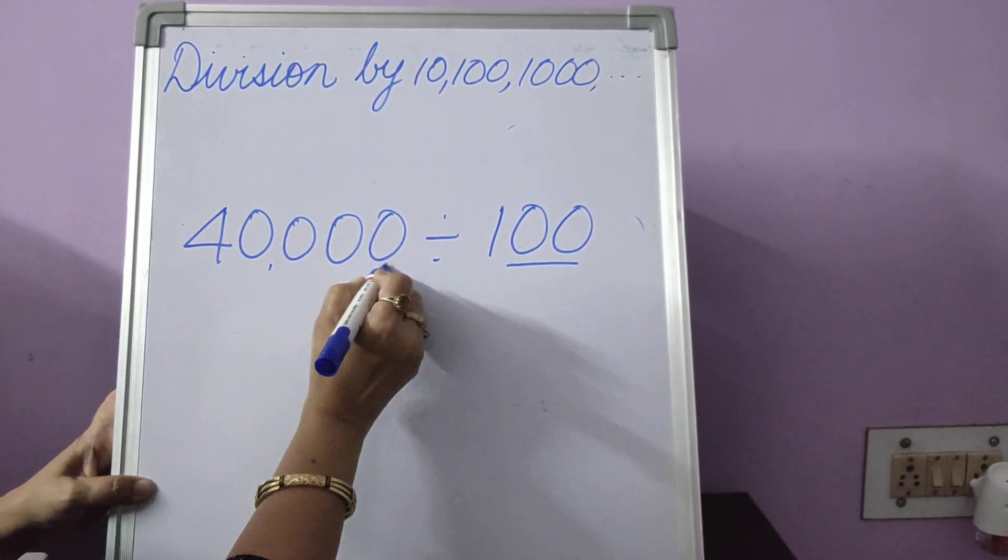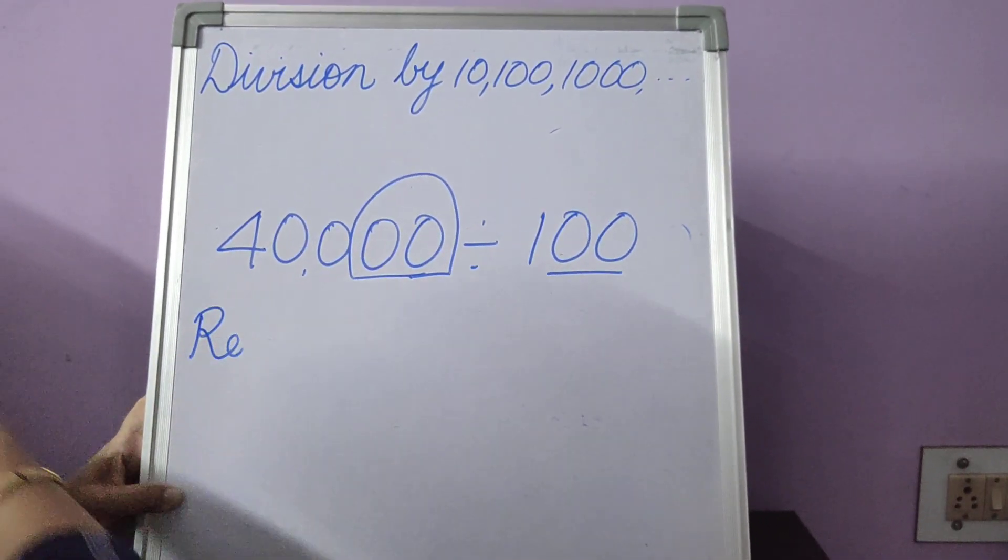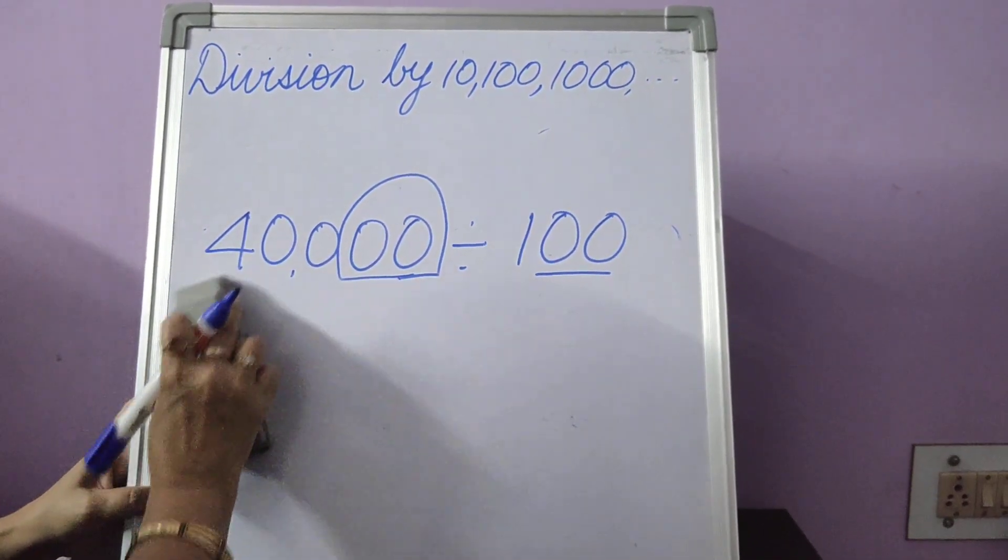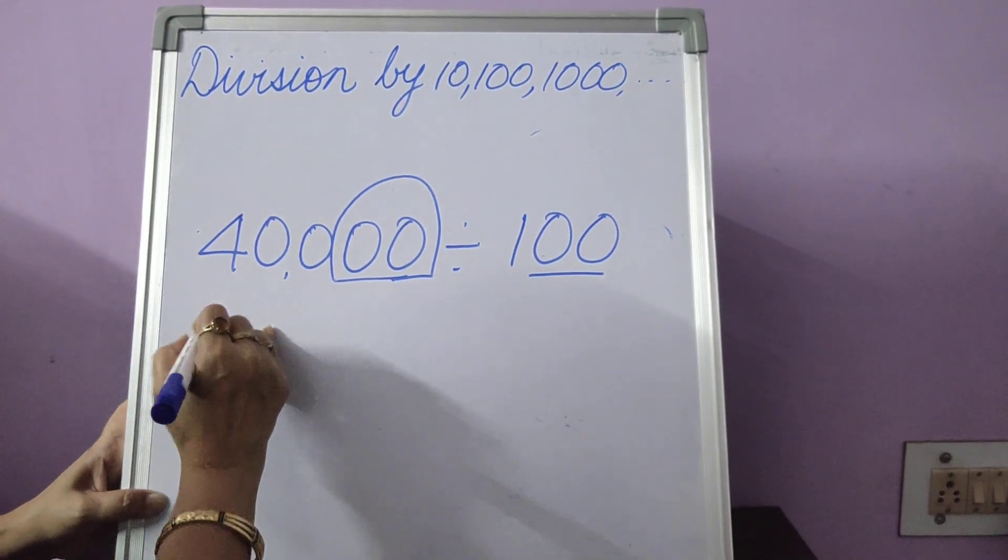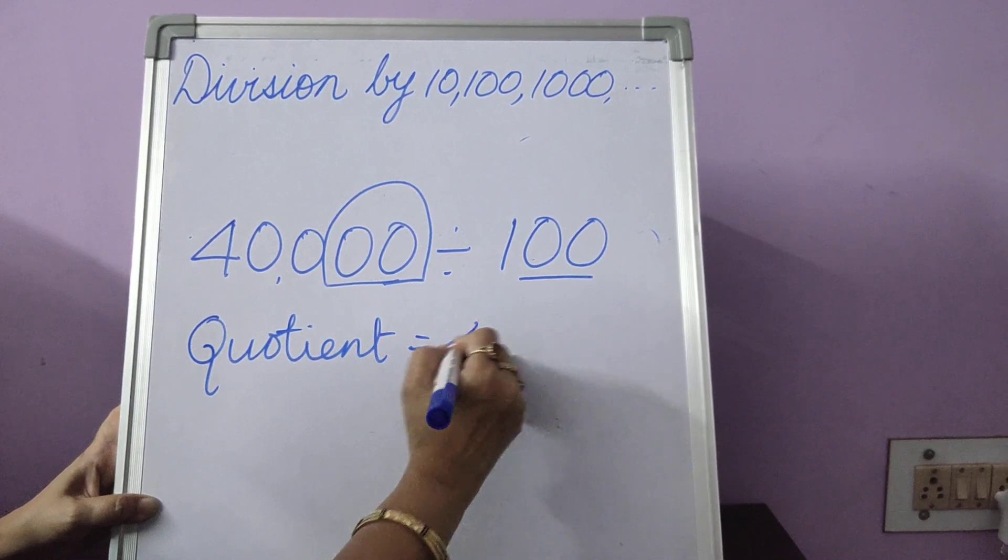Suppose you have 40,000 divided by 100. Only two places, two places. Put it into this circle. What is outside is the quotient. Always write the quotient first. Quotient is 400.